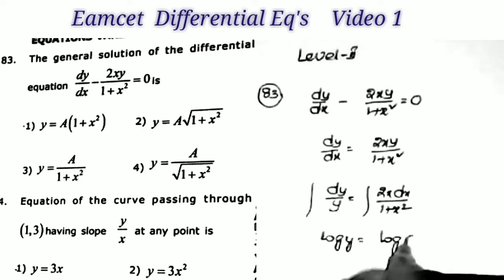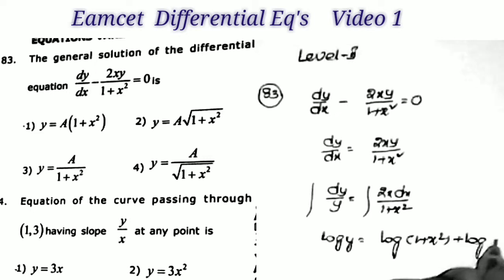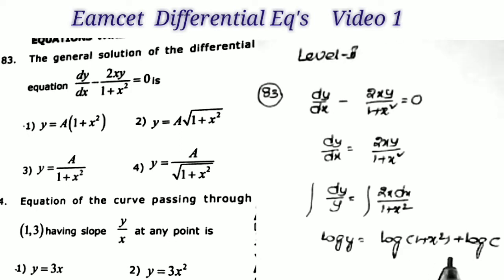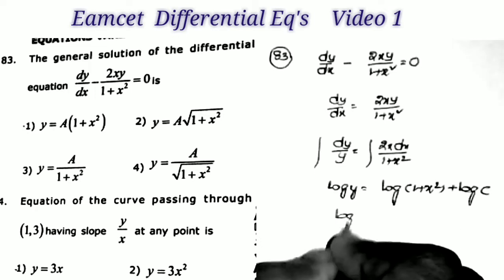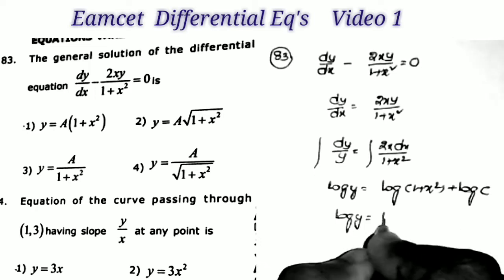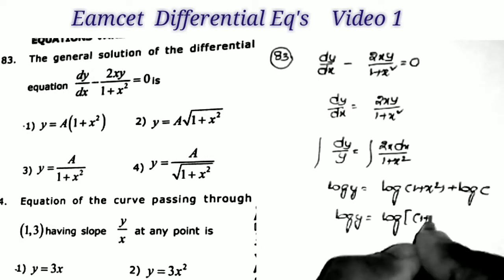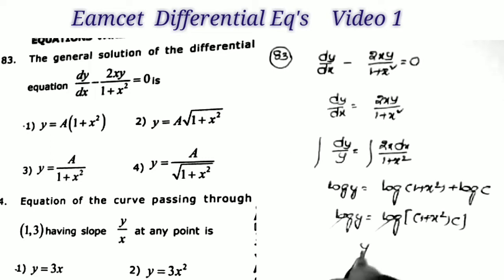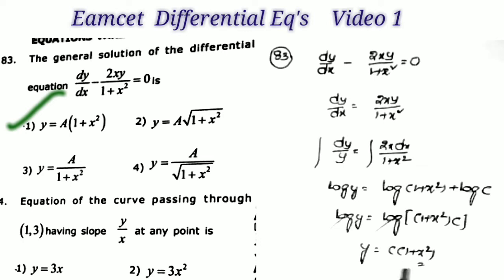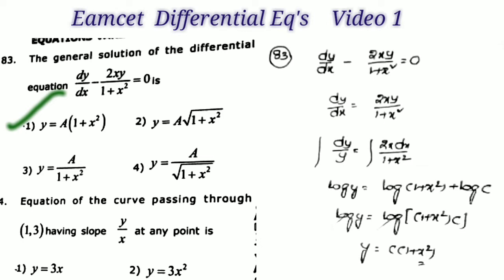The right side, 2x/(1+x²) is of the form f'(x)/f(x), so the integral is log(1+x²) plus log c. Using log a + log b = log ab, we get log y = log[c(1+x²)], therefore the answer is y = c(1+x²). This is the first option — very easy, directly we get the answer.